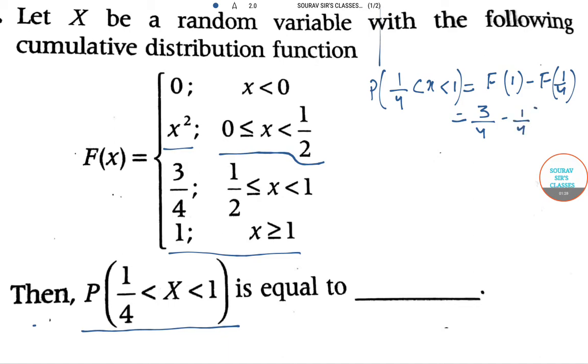So we are getting 3/4 minus 1/16. Taking LCM of 16, we get 12 minus 1, which equals 11/16, which equals 0.68. So the probability is equal to 0.68. Now we move on to the next sum.